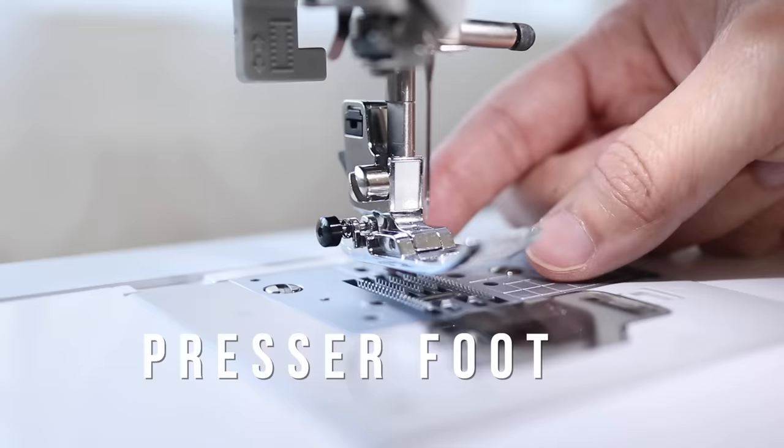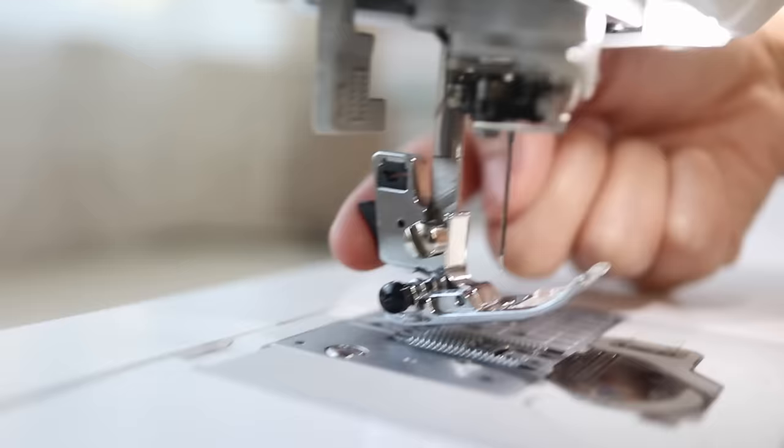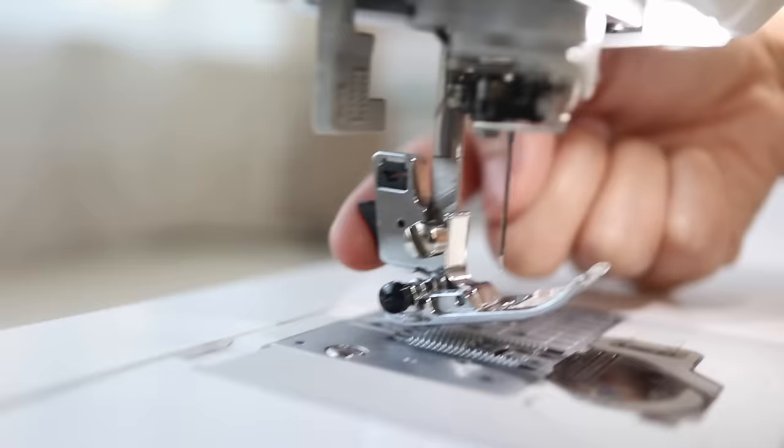Most inexpensive machines still come with a few different presser foots to use but it is something to consider when shopping for a machine, making sure it has the basic accessories. The one that is already attached is usually the main foot.